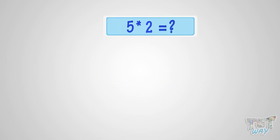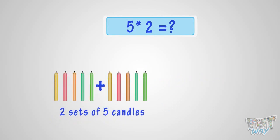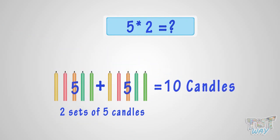What is 5 multiplied with 2? It is the same as two sets of 5 candles. 5 plus 5 equals 10. So, it is 10 candles. That is, 5 multiplied by 2 is 10.